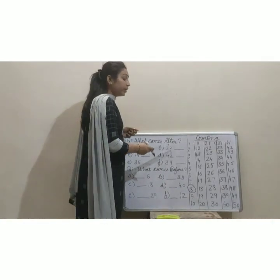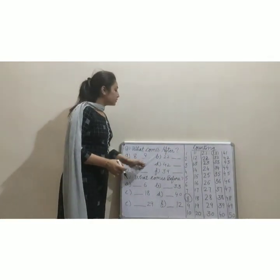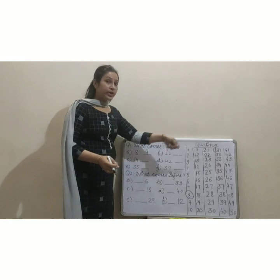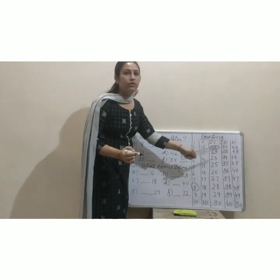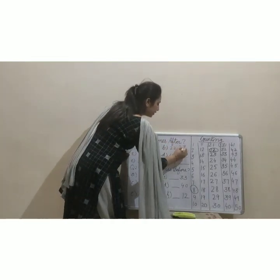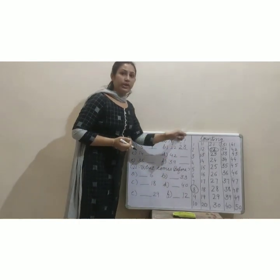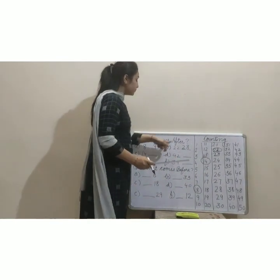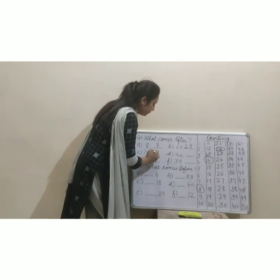Come to next. Next is 22. Where is 22? This one is 22. What comes after 22? 23 — your answer is 23, write here 23. Next is 14. Find 14 — this one is 14. What comes after 14? 15 — yes, 15.